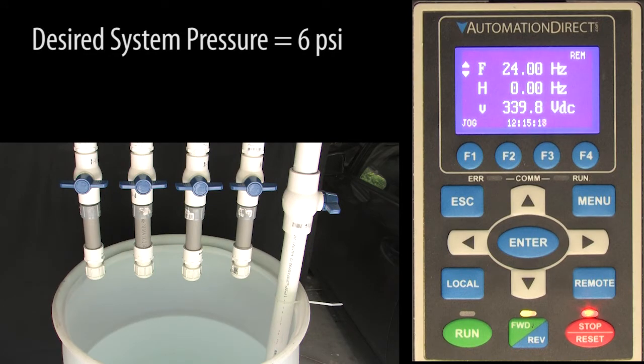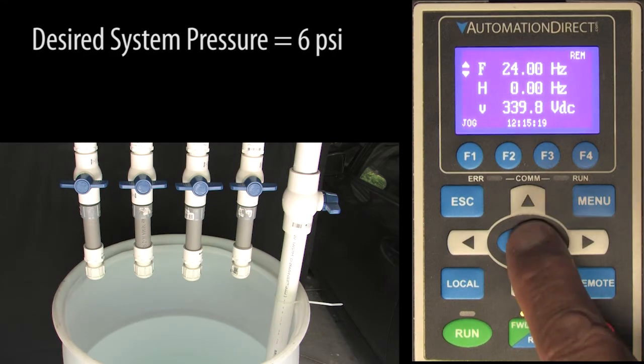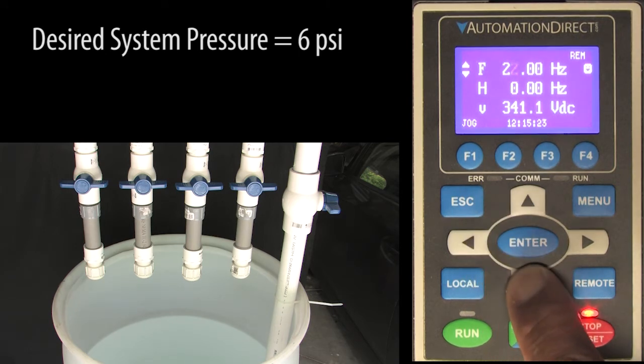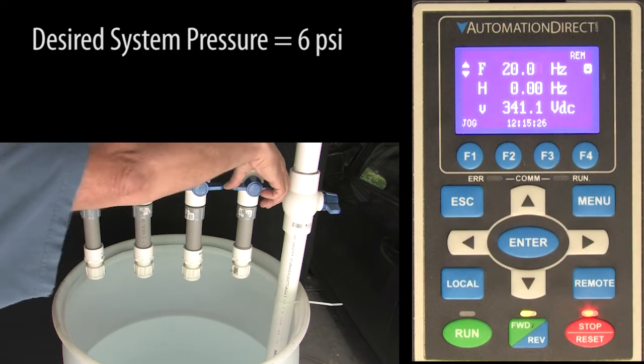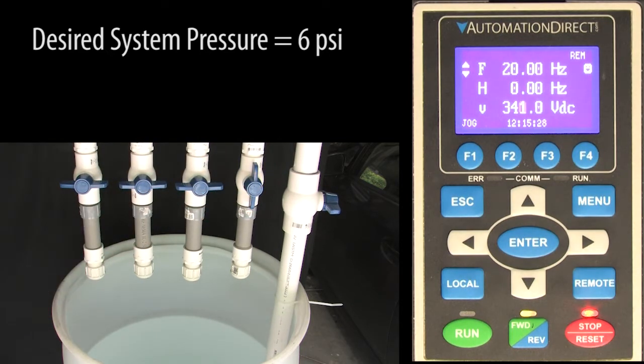Suppose we need to maintain a system pressure of 6 psi. So I'll set the drive frequency to something low, maybe 20 Hz as a starting point, open the first valve and start the drive.